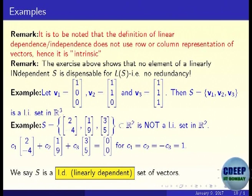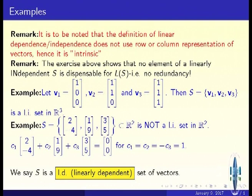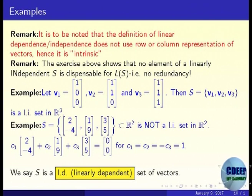A trivial example in R³: take V₁ = (1,0,0), V₂ = (1,1,0), V₃ = (1,1,1). Suppose C₁V₁ + C₂V₂ + C₃V₃ = 0. This gives the vector (C₁+C₂+C₃, C₂+C₃, C₃) = (0,0,0). From the third component: C₃ = 0; then C₂ = 0; then C₁ = 0. So all coefficients must be zero, meaning the set is linearly independent. You can also draw them and verify they are not coplanar.